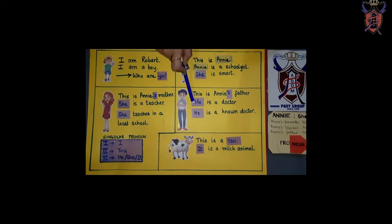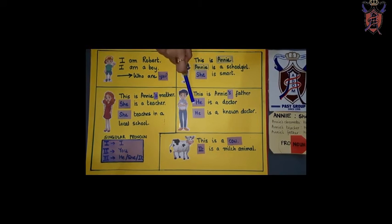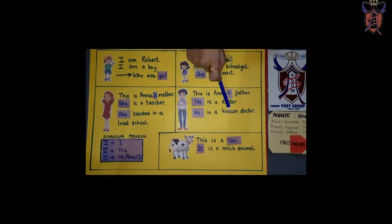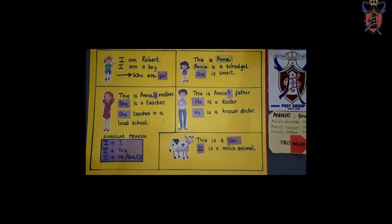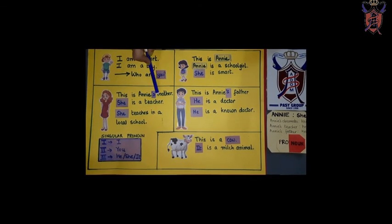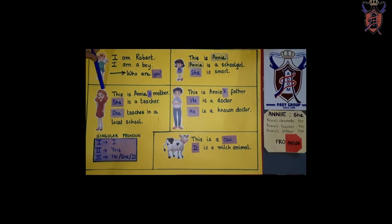Annie's father ke jaga pe likhha hai he. So, he is also a pronoun. He is a doctor. He is a known doctor. Right? And who is this person? This is Annie's mother. Yeh korn hai? Yeh Annie ki mammi hai.